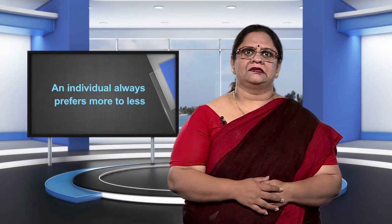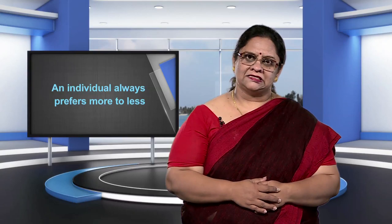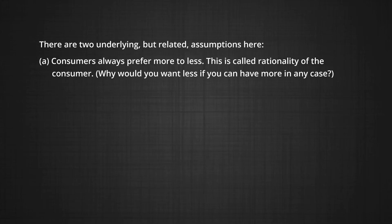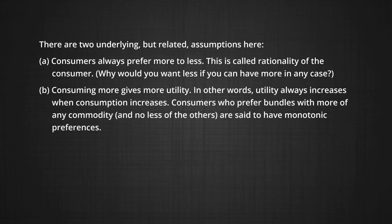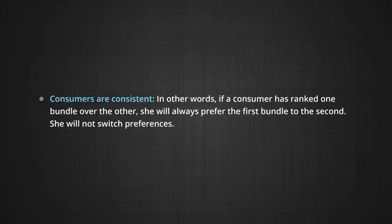I will always prefer a bundle that gives me more utility to one that gives me less. There are two underlying but related assumptions here. A: consumers always prefer more to less — this is called rationality of the consumer. Why would you want less if you can have more? B: consuming more gives me more utility; in other words, utility always increases when consumption increases. Consumers who prefer bundles with more of any commodity and no less of the other are said to have monotonic preferences. The third assumption is that consumers are consistent — a consumer who has ranked one bundle over another will always prefer the first bundle to the second and will not switch preferences.